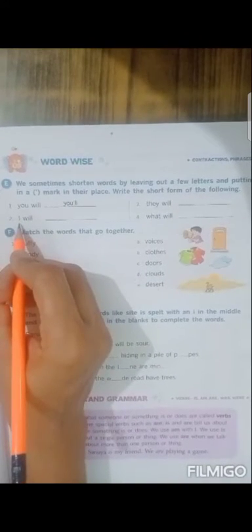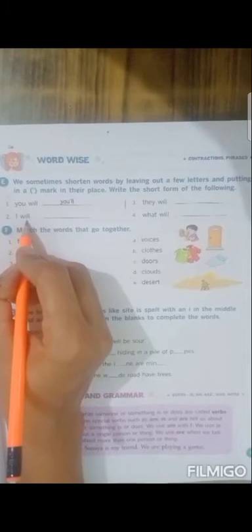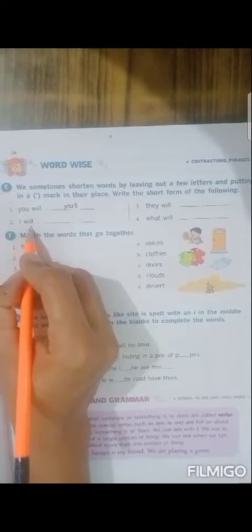The second one is I will. How can we write the word I will? The first word will be written complete, that is I. Put an apostrophe on the top and then you will simply write L-L. So for will, the short form is written as L-L.